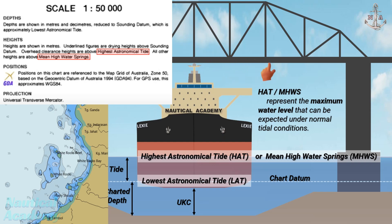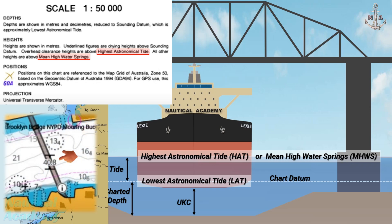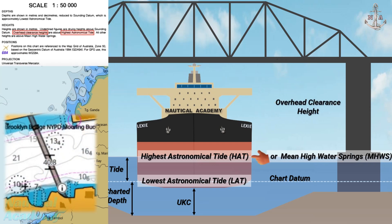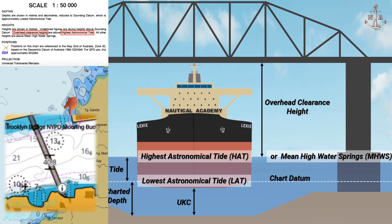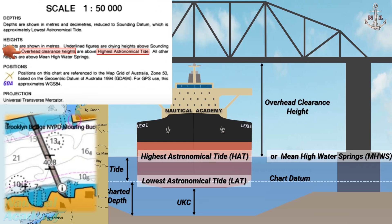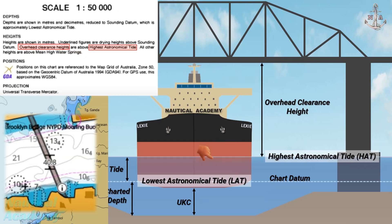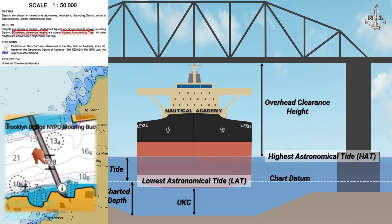The height of a bridge or any overhead obstruction is listed on a chart as the overhead clearance height. It is measured from the Highest Astronomical Tide, or from Mean High Water Springs, up to the underside of the overhead obstruction. In this chart, the given overhead clearance heights are above the Highest Astronomical Tide — meaning this bridge has an overhead clearance height of 40.8 meters above the Highest Astronomical Tide.